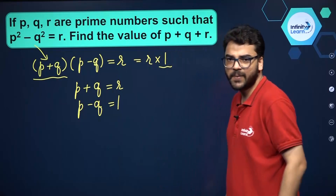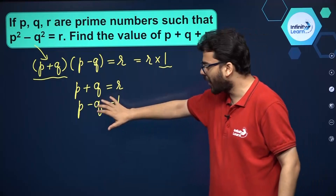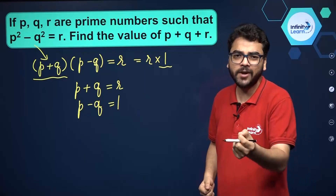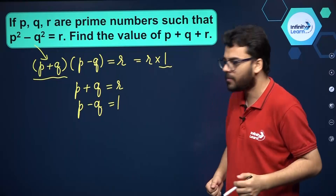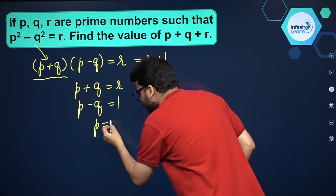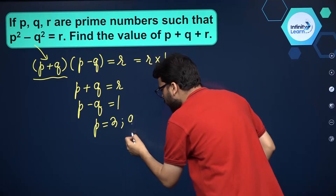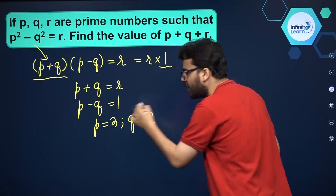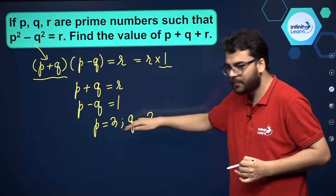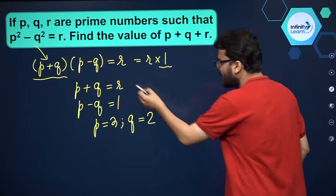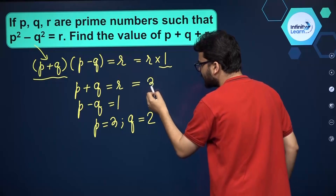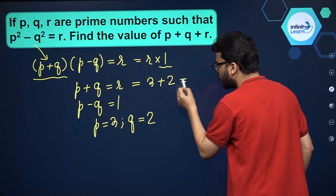So p and q are prime numbers and p minus q is equal to 1. The only possibility for p and q is that p will be equal to 3 and q will be equal to 2 — this is the only possibility. So we have the values of p and q, and r will be equal to p plus q, which is 3 plus 2, equal to 5.